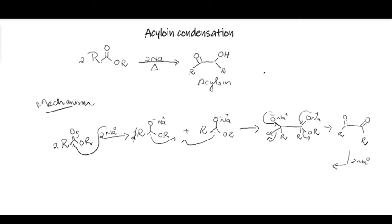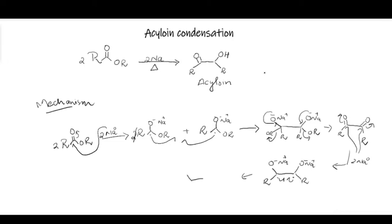This 1,2-diketone is again attacked by sodium atoms — two sodium atoms will provide one electron each to these carbonyl carbons, forming a diradical dianion again. One electron is transferred to one carbonyl carbon and the other to the second carbonyl carbon, pushing the pi electrons towards oxygen to form a diradical dianion. Because we have a diradical situation, these two radicals can share their electrons to form a pi bond, with the oxyanions still present in the system.